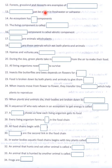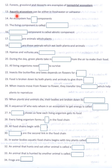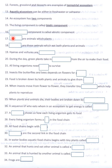Ecosystem may be terrestrial or aquatic. Terrestrial ecosystems are found on land — forest, grassland and deserts are examples of terrestrial ecosystems. Aquatic ecosystems can be either in freshwater or saltwater. An ecosystem has two components: the living component is called biotic and the non-living component is called abiotic.